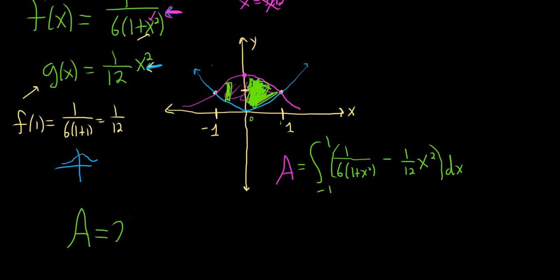So the area is going to be 2 times the integral from 0 to 1 of 1 sixth. I'm going to rewrite this in a nice way. 1 over 1 plus x squared minus 1 12th x squared. And don't forget the parentheses and the dx.